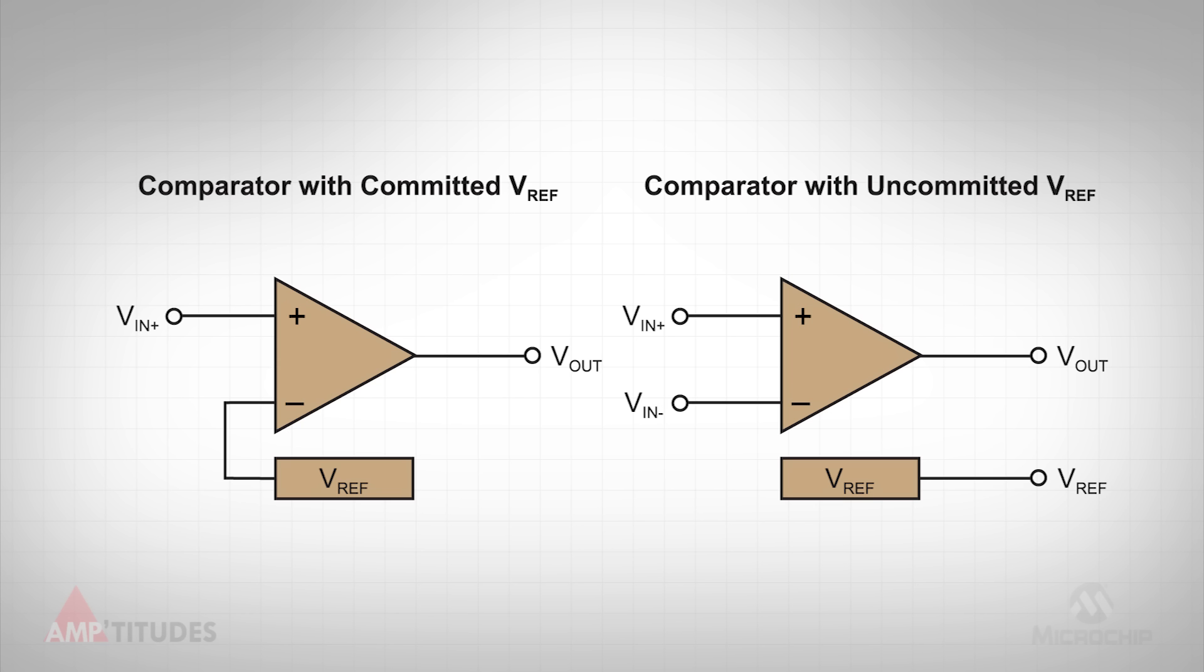While standard comparators are great for comparing an input voltage to a given reference, windowed comparators are used to determine if a given input is within a predefined range.